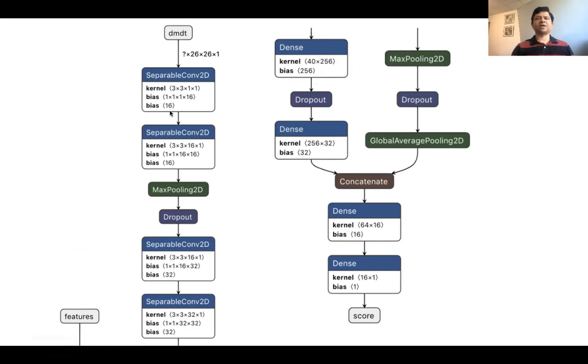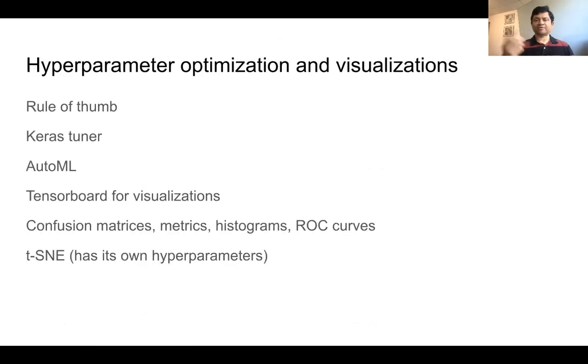And then that is concatenated with this bigger part which comes from the DMDT. This is the convolutional part. You have a separable convolutional 2D and another layer of that. And then you do max pooling on that, dropout. Another couple of pairs of separable convolutional 2D, more max pooling, more dropout. Then you do global average pooling and then concatenate that and a couple of dense layers to do the scoring after that. This is taking care of both the images that come from the light curve and the features that come from the light curves and concatenating them to get the scores that one desires. We would wish to combine this in a higher-level metaclassifier also, but we have not reached that level yet.